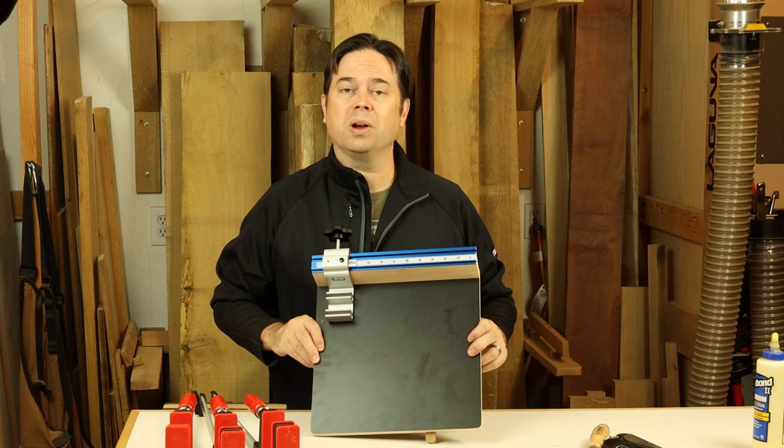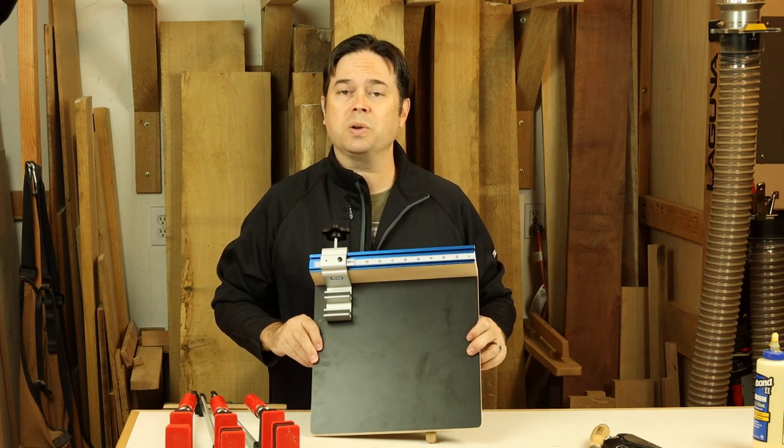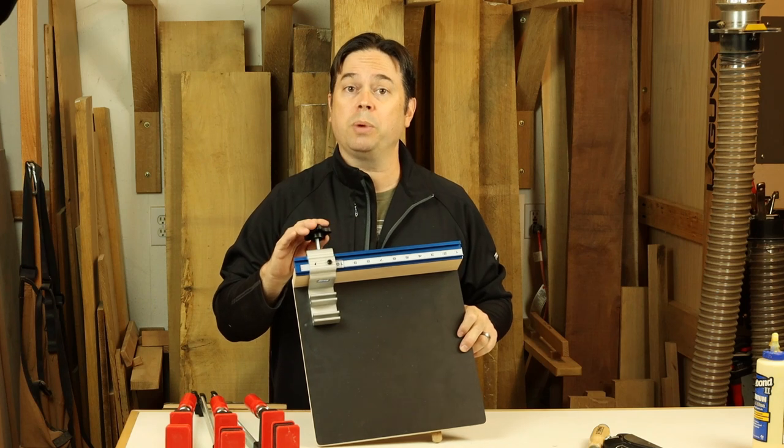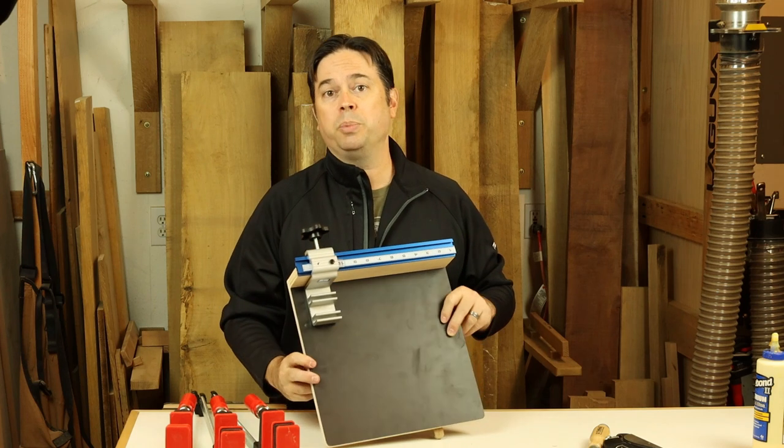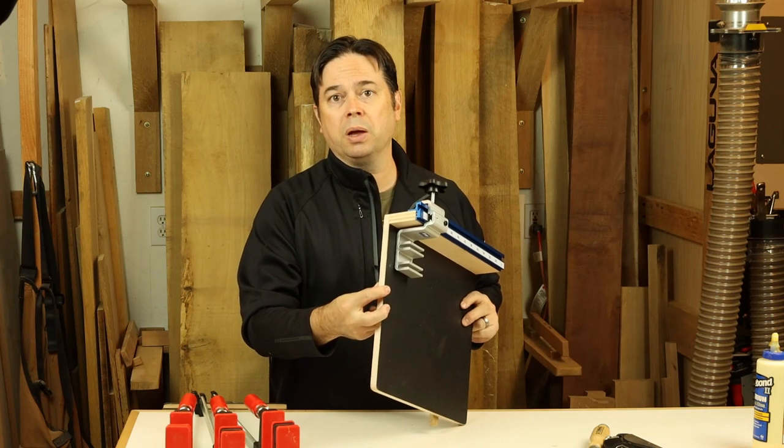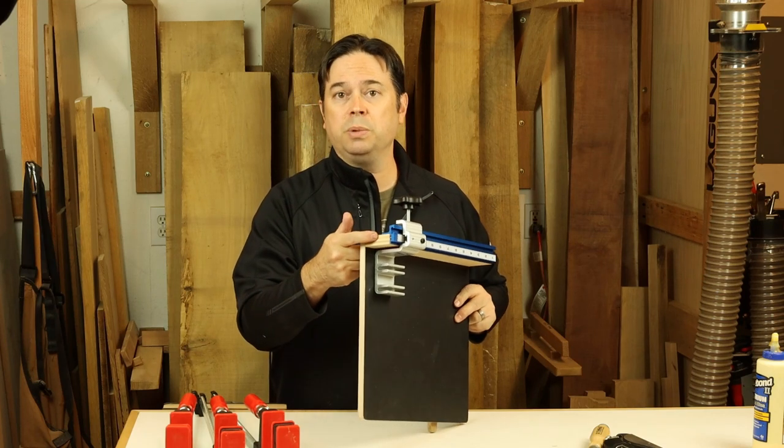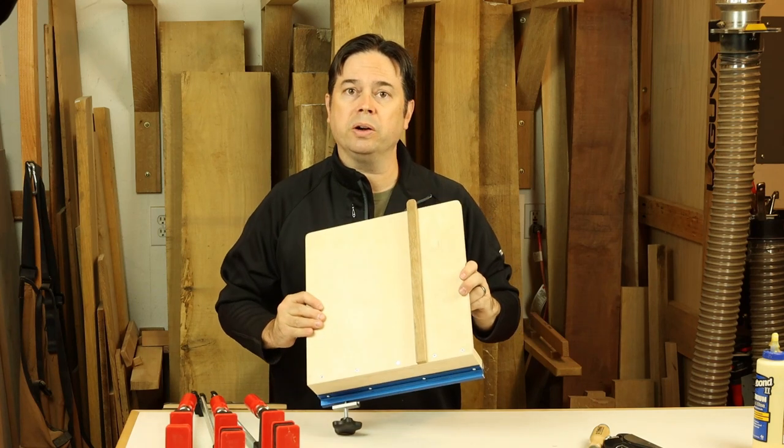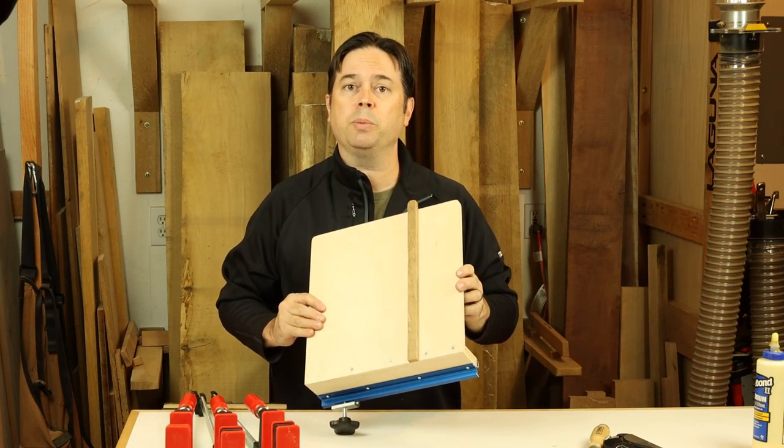So the details on this little crosscut sled: it's 13 inches square, which with the stop system will allow you to make cuts up to about 11 inches long. The base is built from half inch thick Baltic birch plywood, whereas the fence needs to be three quarter inch plywood. On the back side, there's a runner that will ride in the slot of your band saw table.